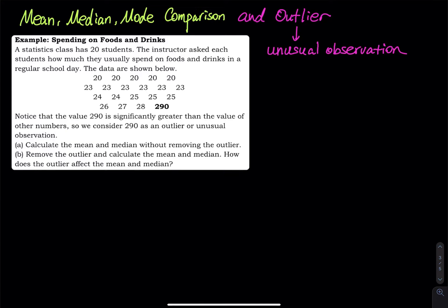In this video I'm going to use this example to make a comparison on the mean, median, and mode, and in the meantime I want to introduce outlier. So first of all, what is an outlier?